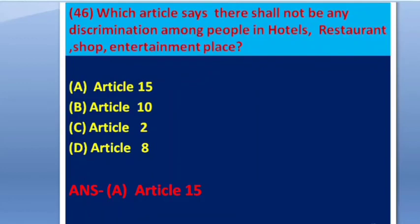Next question: Which article says there shall be no discrimination among people in hotels, restaurants, shops, and entertainment places? The answer is Article 15(2). This is a most important question.